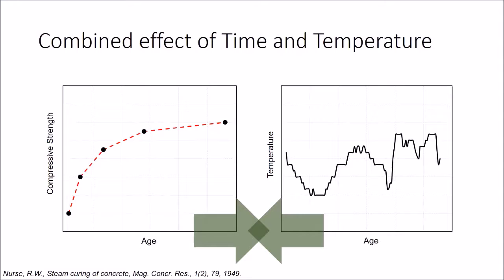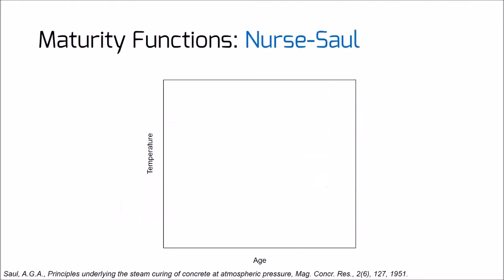Nurse also did not measure the concrete temperature directly; instead, he measured the temperature of the curing chamber. In 1951, Saul introduced the term maturity, which was correlated with the product of time and temperature, and he used the effect of datum temperature in his studies. The results of these scientific researches led to the famous Nurse-Saul Maturity Function that we use today.